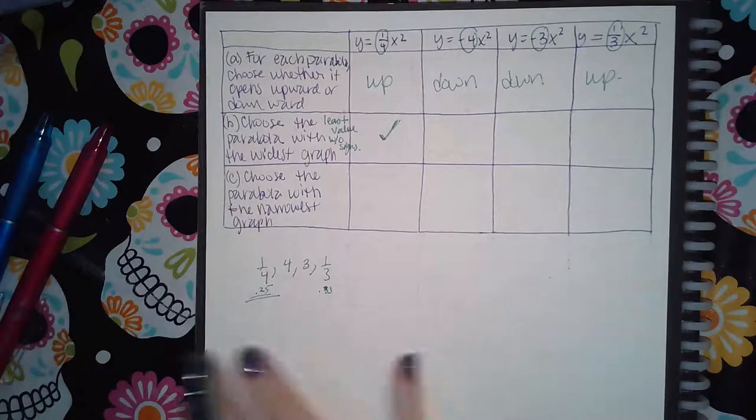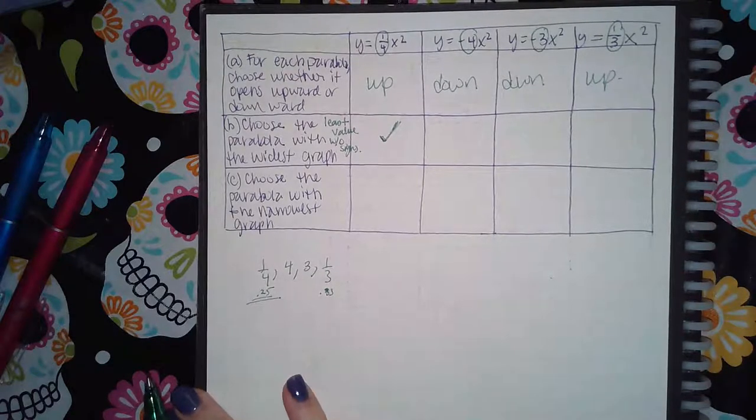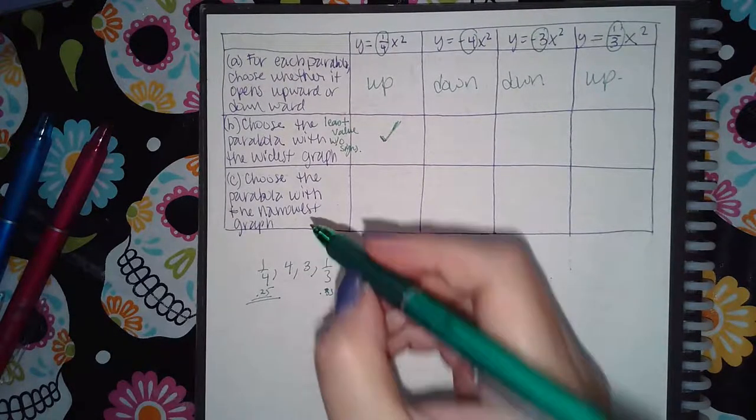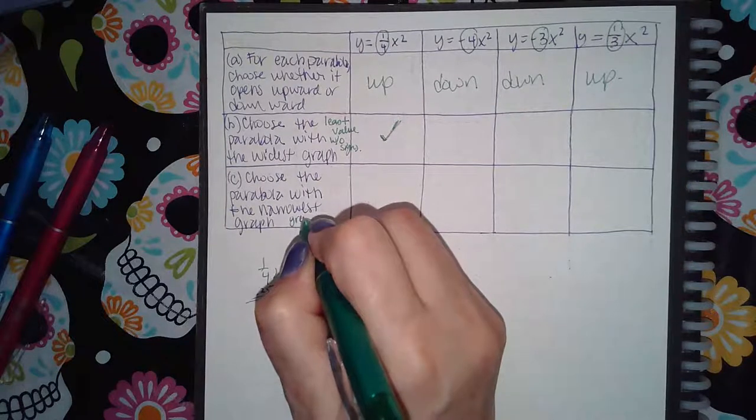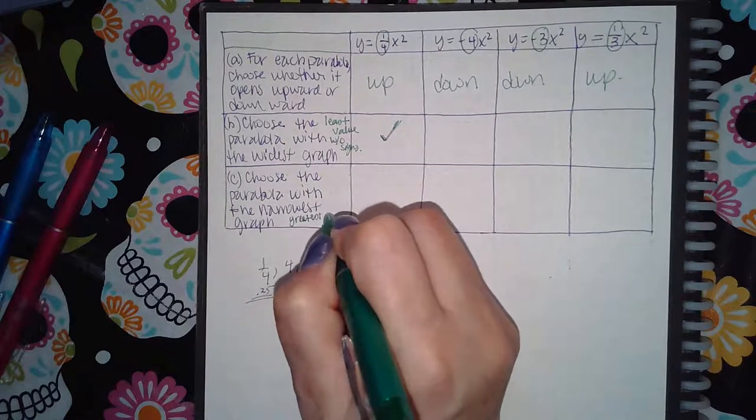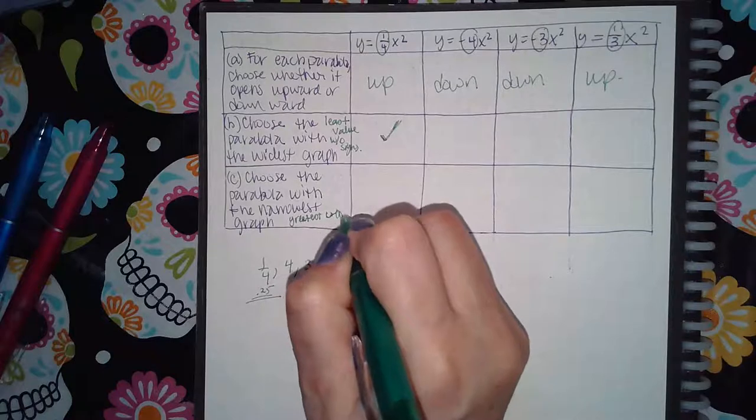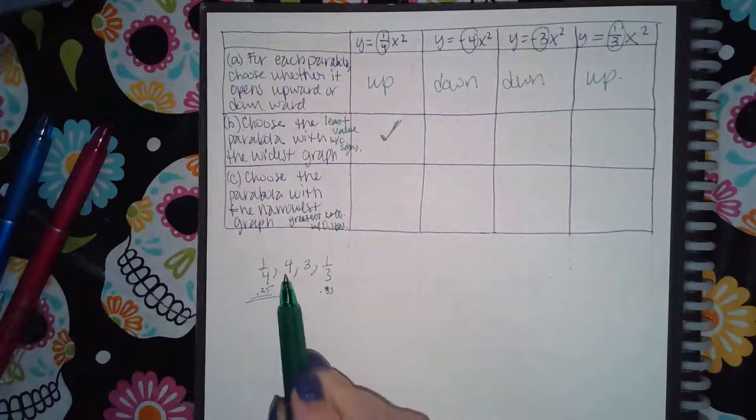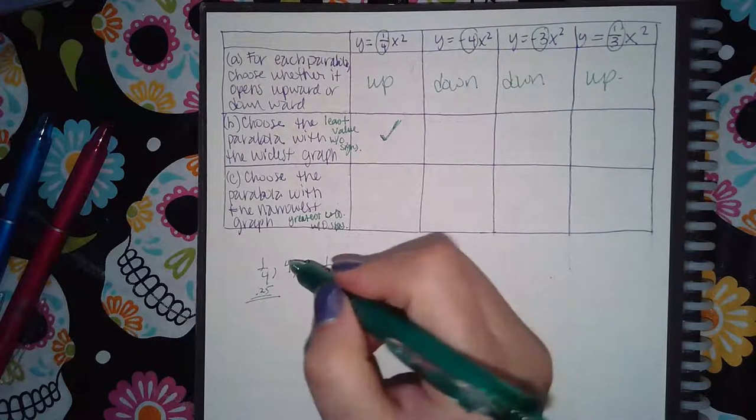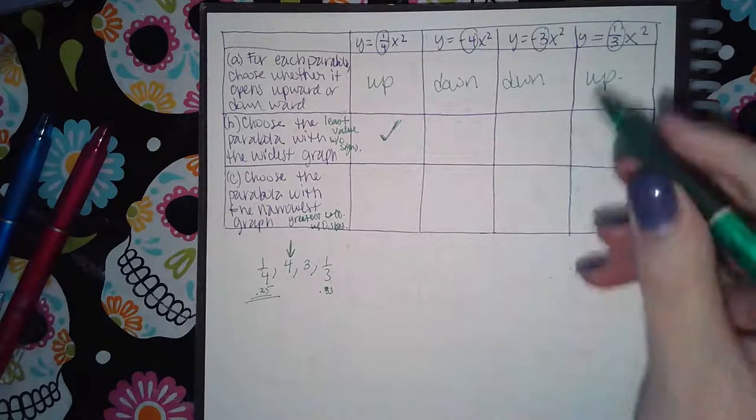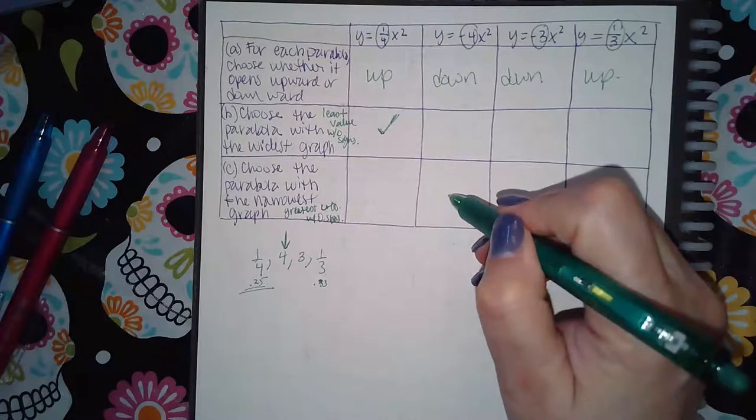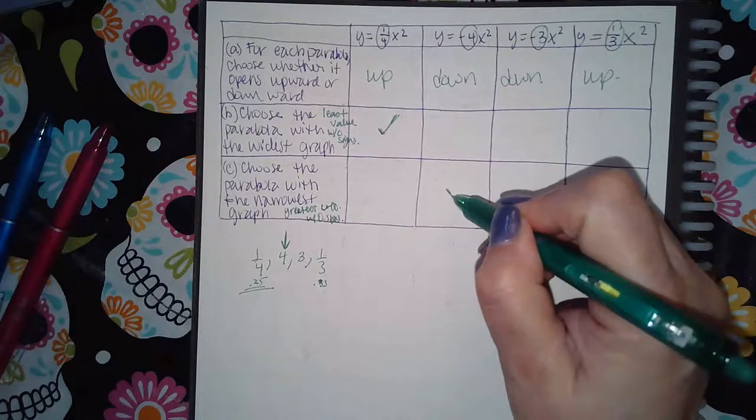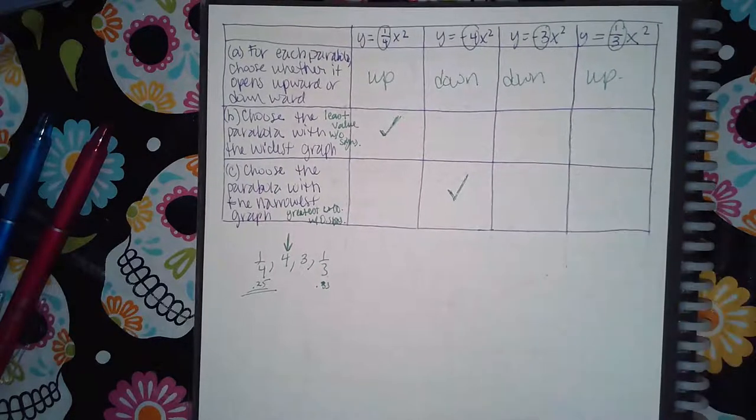Now for C it says choose the parabola with the narrowest graph. So now you're looking for the greatest coefficient but without the sign. Looking at these three numbers without the signs, the greatest one is the four. And so even though it's going down, it doesn't matter, it's still going to be the most narrow graph of all of them.